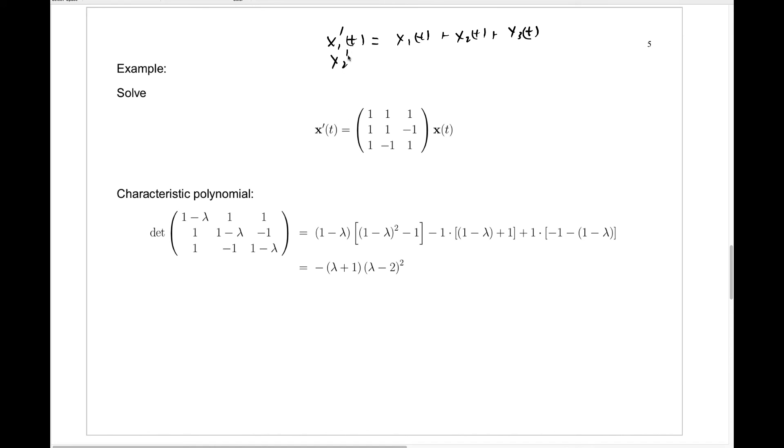We need x2 prime of t to be x1 of t plus x2 of t minus x3 of t, and we need x3 prime of t to be x1 of t minus x2 of t plus x3 of t. So this is our system of three linear equations in three unknowns, and that's equivalent to this matrix system.